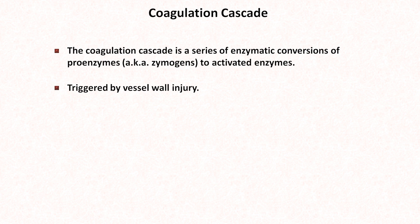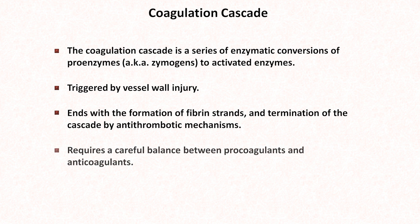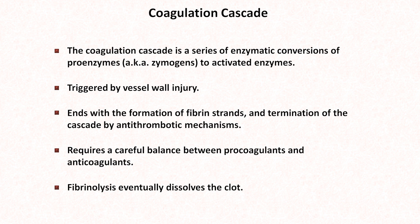Its initial trigger is normally vessel wall injury. It ends with the formation of fibrin strands and the termination of the cascade by various antithrombotic mechanisms. It requires a careful balance between procoagulants and anticoagulants. Too much procoagulants and spontaneous clotting will occur, resulting in deep venous thromboses and pulmonary emboli. Too much anticoagulants and excessive bleeding and hemorrhaging will occur. Finally, the process of fibrinolysis eventually dissolves the clot.